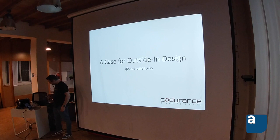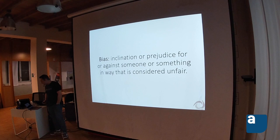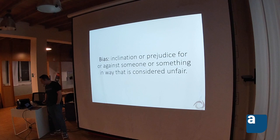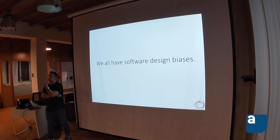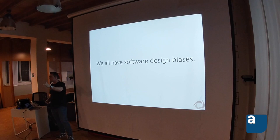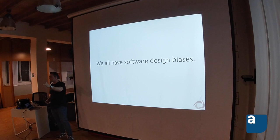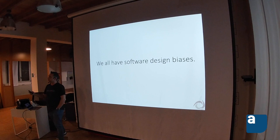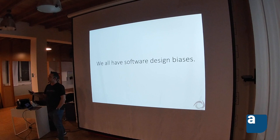Before I start, I want to talk about bias: an inclination or prejudice for or against someone or something in a way that is considered unfair. We all have software design biases — similar to programming languages and other things. Project after project, we pick some design styles that we like — being layered, being hexagonal, being microservice, whatever that is. One way or another we make that work, and we do that again in other projects. You develop and get better at applying some of these design techniques, and you build the bias towards them.